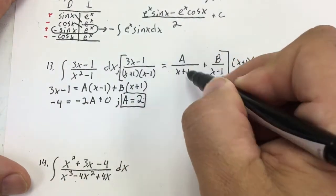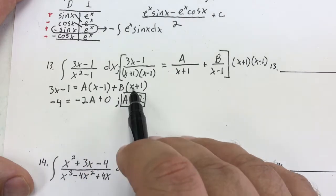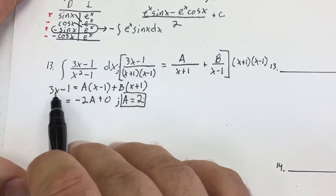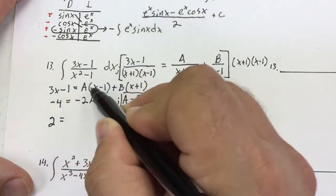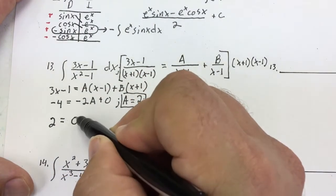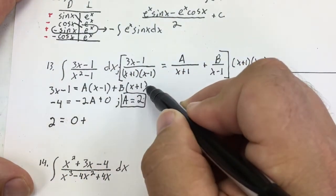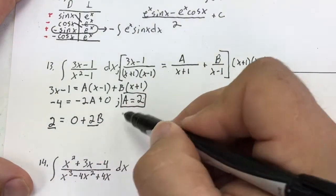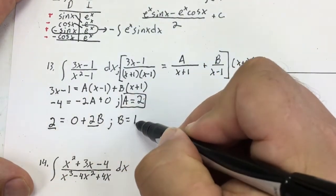So now I know I can put 2 on top of (x + 1). I'm going to do the same setup to solve for B, but I'm going to let x equal one. That gives me three minus one equals two, and one plus one is two, so 2 = 2B. Dividing both sides by two gives me B equals 1.